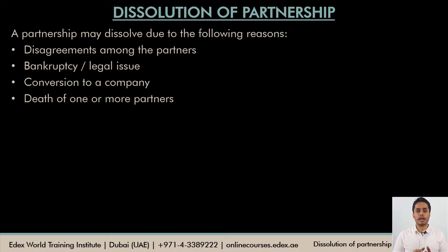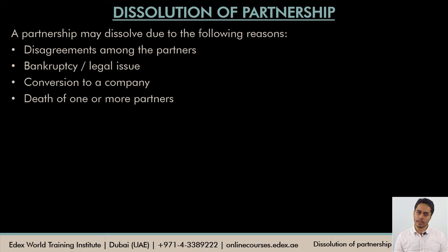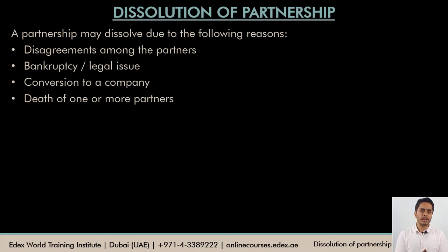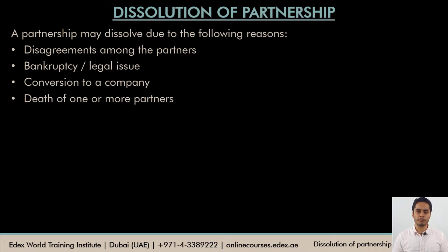There could be bankruptcy issues or some other legal issues on the firm and the firm has to shut down. The firm may have grown in size and the partners now want to convert it into a company — a private limited company or a public limited company. That could also be a common reason for dissolution. There could be the death of one or more partners and the other partners may not want to continue, so they might dissolve the firm.